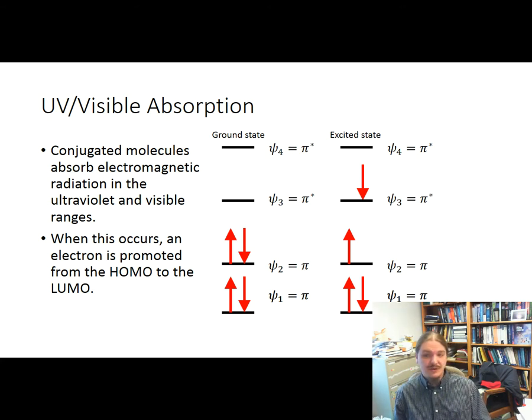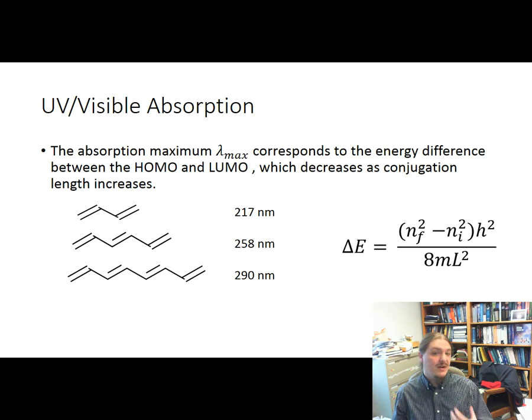And so the energy difference between the HOMO and the LUMO can be used to help estimate what frequency or what wavelength of light is going to be used. I have here 1,3-butadiene, 1,3,5-hexatriene, 1,3,5,7-octatetraene, and their lambda max—so their wavelength of maximum absorption. And you can see that it increases with increasing conjugation. And remember that wavelength is inversely proportional to energy, so that means that the energy difference between those energy levels is decreasing. And so it goes from 217 nanometers to 290 nanometers as you increase conjugation.